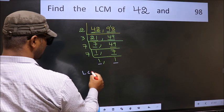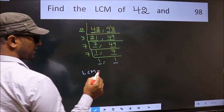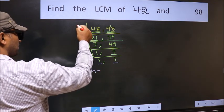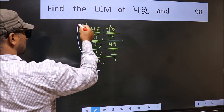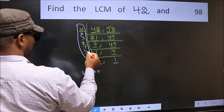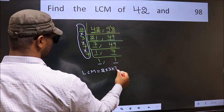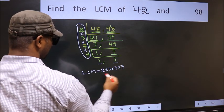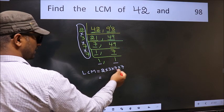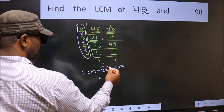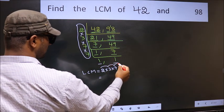So our LCM is the product of these numbers. That is 2 into 3 into 7 into 7. Let us multiply these numbers. 2 into 3 is 6, 6 into 7 is 42, 42 into 7.